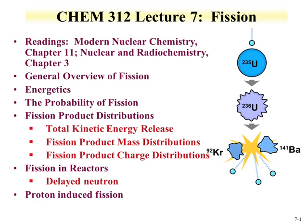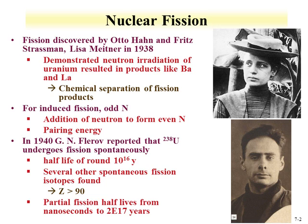We'll discuss why there is asymmetric and in some cases symmetric fission product distribution, and fission products in reactors — particularly delayed neutrons, which are fission products that undergo neutron emission rather than beta decay. We'll end by discussing proton-induced fission. An example of fission is shown where a neutron interacts with uranium-235, makes an excited state of uranium-236, which undergoes fission producing krypton, barium, and three neutrons.